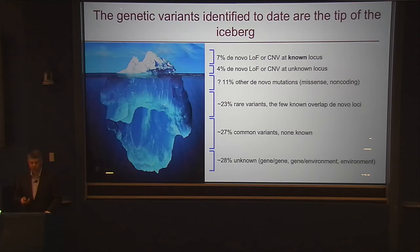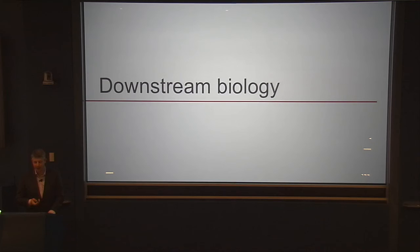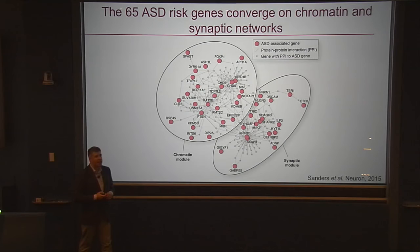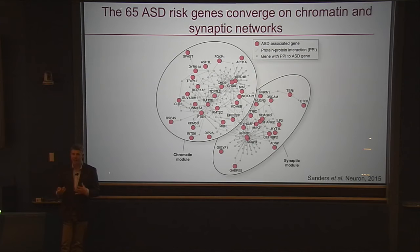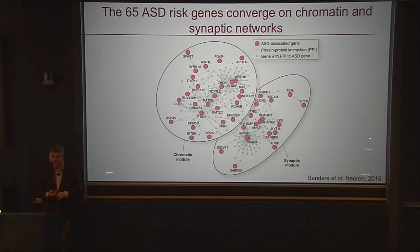If I take the 65 identified genes and think about how they interact — for example, which proteins tend to bind together — I find they form a clump more than you'd expect by chance, suggesting meaningful biological interactions. Within this clump are two sub-networks. On the left, we have chromatin regulation — the very essence of development, telling cells what they should be, where they should be, how they should act. On the right, we have the synaptic module — all about communication between neurons in the brain. The synapse was not a surprise and has been well-recognized for many years. The chromatin module, however, we did not find until we took these unbiased genomic approaches, and I think that's been one of the most critical findings — you can see that chromatin module is actually bigger.